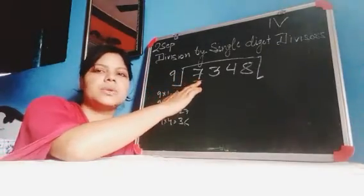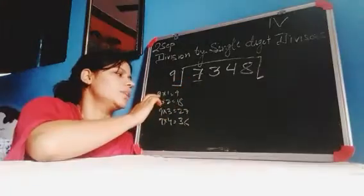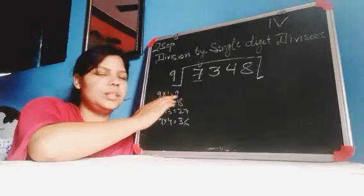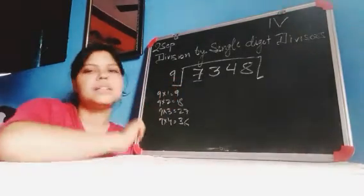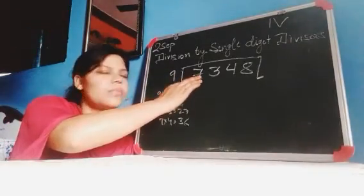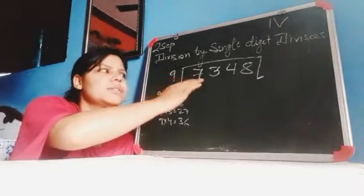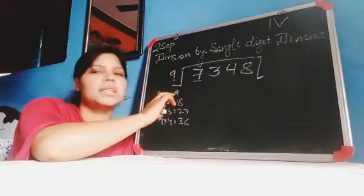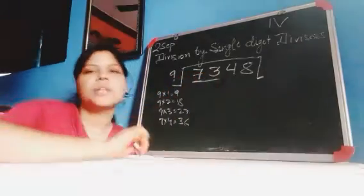Here is 7. But in the 9 table, it starts at 9 ones are 9. Because 7 is less than 9, 7 is not in the table of 9. Hence we take 2 digits.